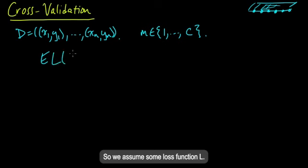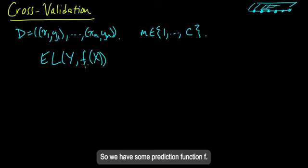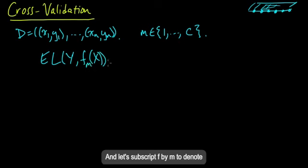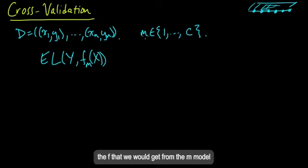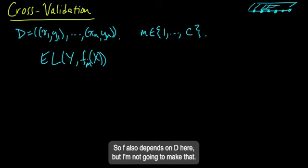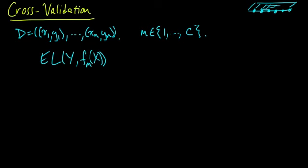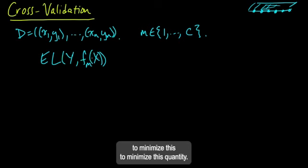So we assume some loss function L. And we want to minimize the expected loss for a new Y and X. So we have some prediction function F. And let's subscript F by M to denote the F that we would get from the Mth model on the data set D. So F also depends on D here, but I'm not making that explicit.